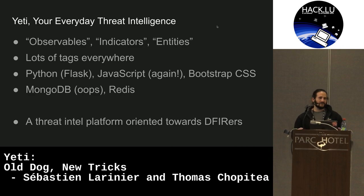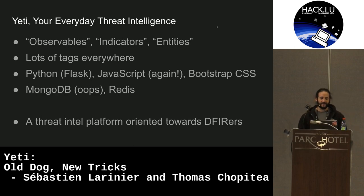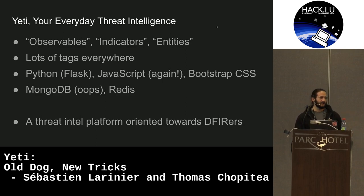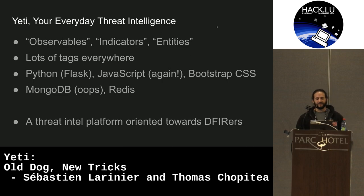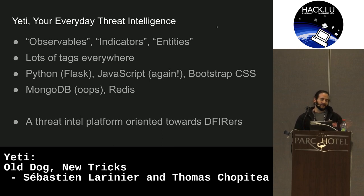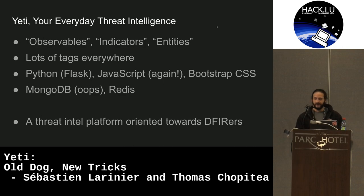Yeti is a threat intel platform, open source, essentially a one-man shop. It divided concepts between observables — IP addresses, URLs, hashes — indicators such as regular expressions or Yara rules, and entities like malware, threat actors, and campaigns. We used tags everywhere. If you tagged an observable with the same tag as an entity, a link was created between them. Indicators could also do pattern matching across observables, linking them to entities on a match.